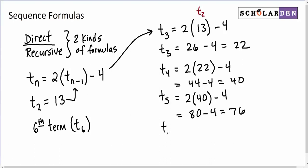We're almost there. Now we can say T₆ is 2 times 76, minus 4. 2 times 76 is 152, minus 4. And that's equal to 148.